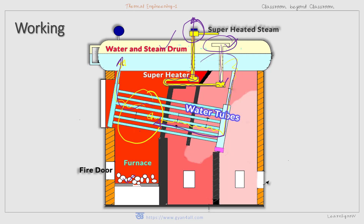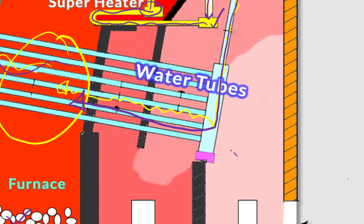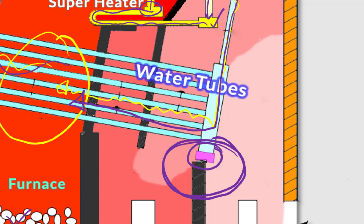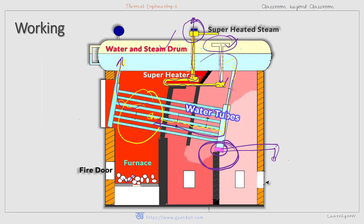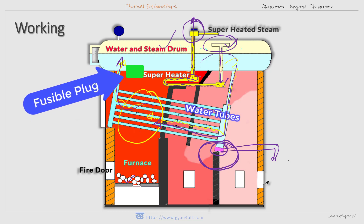At the lowest point of the boiler, mud and sediments are collected in the mud box and blown out through the blow-off cock periodically. All mountings — including the steam stop valve, safety valve, water gauge, pressure gauge, feed check valve, and fusible plug — are attached to the boiler for safe operation.